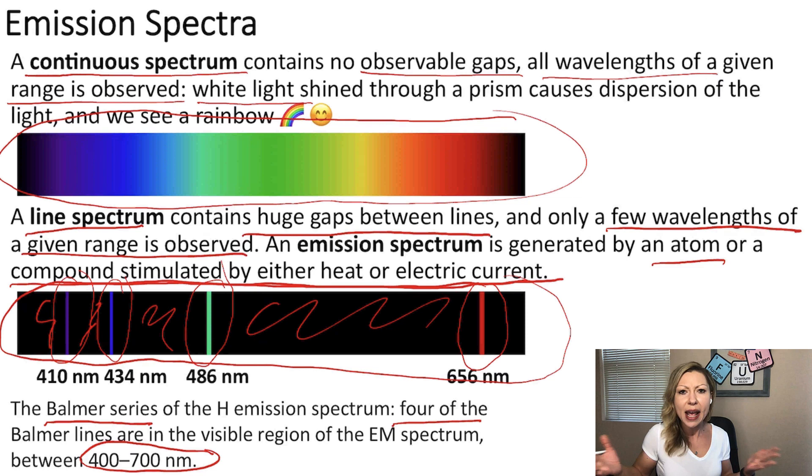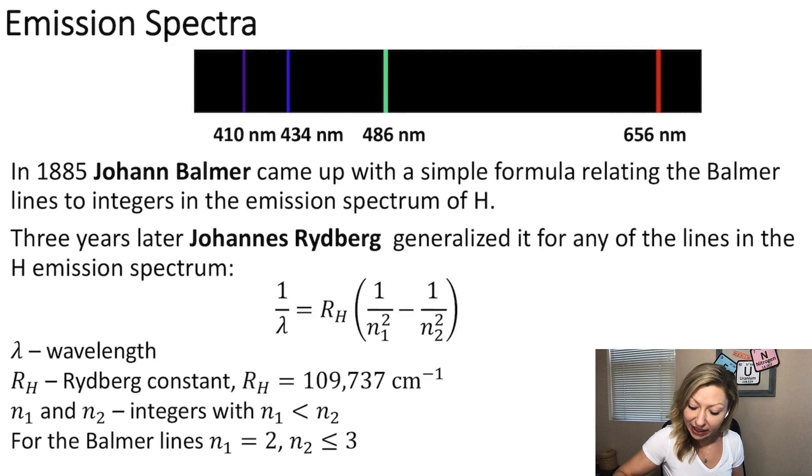Now, how come atoms and compounds can emit radiation of a specific wavelength? Well, this baffled scientists in the early 1900s. But Balmer came up with a simple formula relating the Balmer lines to integers in the emission spectrum of hydrogen